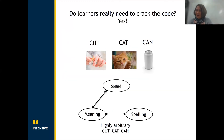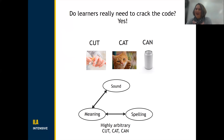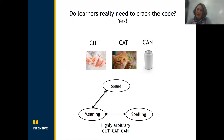Do learners really need to crack that code if it's so complicated? Can't learners just come to the classroom and memorize individual words? The answer is that they cannot. The reason is that that is an arbitrary learning task. The words cut, cat, and can look similar, but there's no similarity in meaning — so those are entirely arbitrary visual symbols to represent those meanings. And humans are very bad at arbitrary learning.